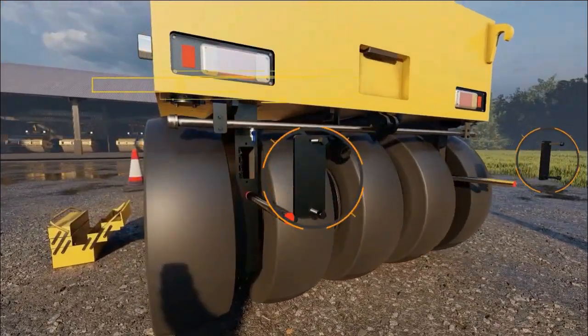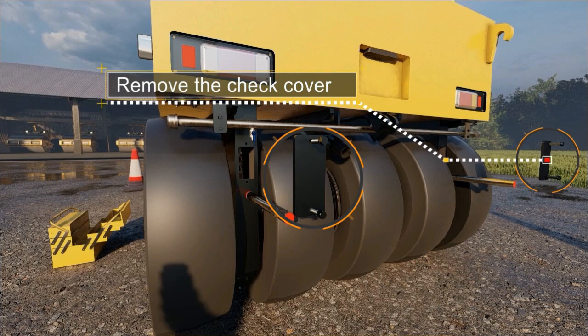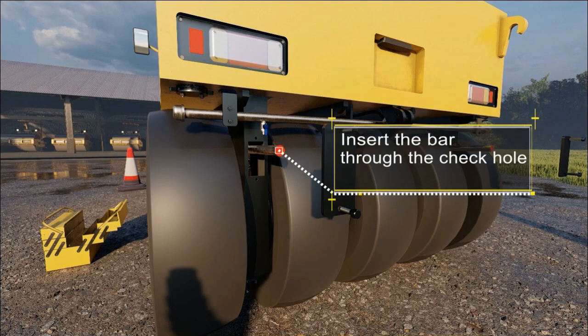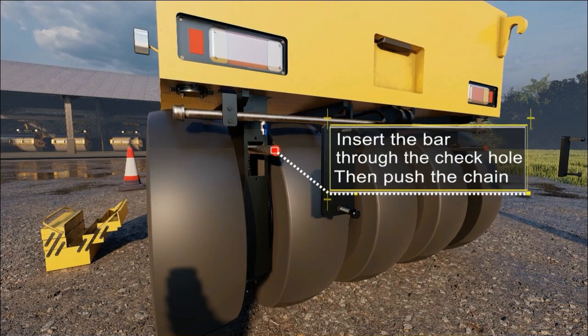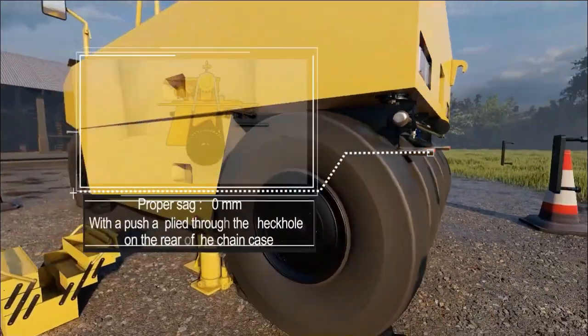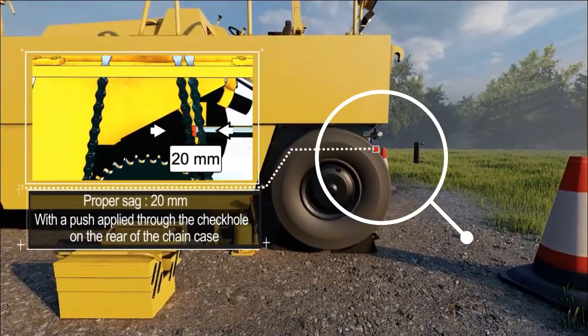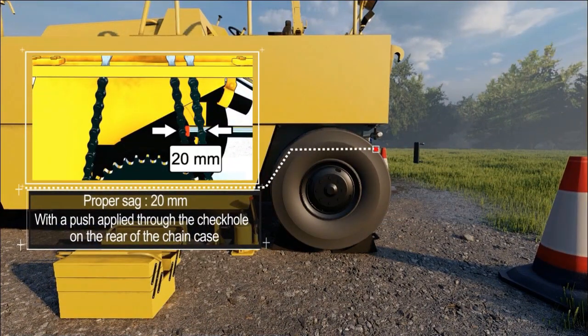Remove the check cover. Insert the bar through the check hole, then push the chain. Pop a sack 20mm with a push applied through the check hole on the rear of the chain case.